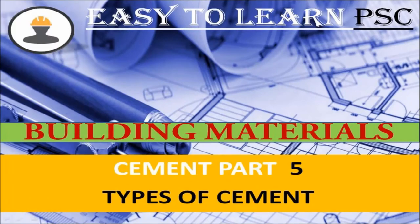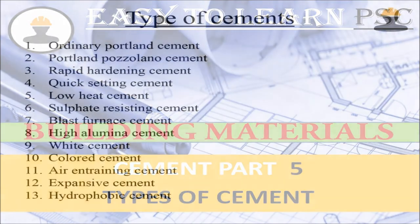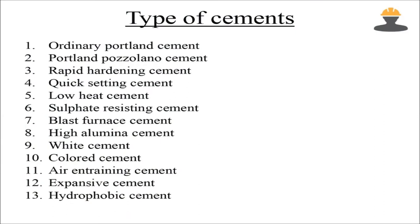We are going to take three parts of cement: lab tests, properties, and ingredients. We are going to cover the types of cement — ordinary Portland, pozzolano, rapid hardening, quick setting, low heat, sulphate resisting, blast furnace, high alumina, white cement, coloured cement, air entraining, expansive cement, and hydrophobic cement.